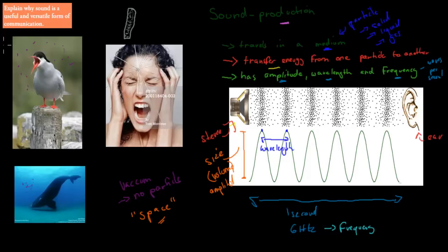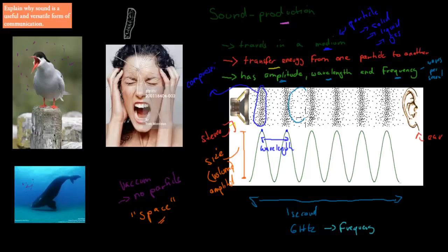There's also something called compression and rarefaction. Compression is where everything is really packed tightly together — that's compression. And then there's rarefaction, which is a space where there's very little. We're going to cover that in more detail in the next video.